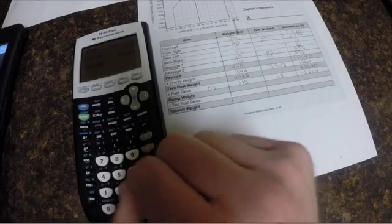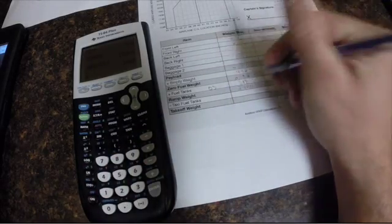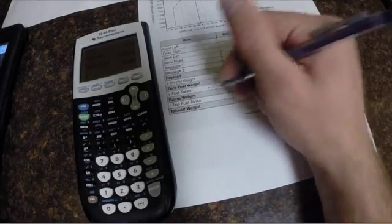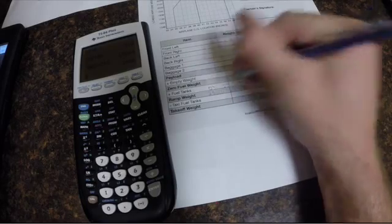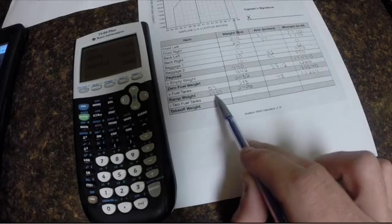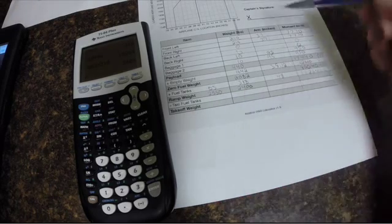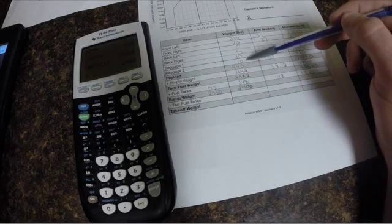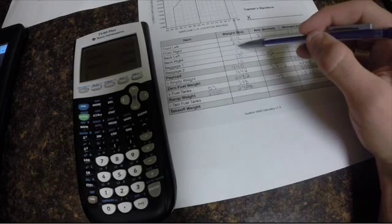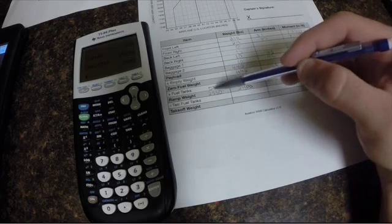So then you add these two together, 2,082 plus 318, and that gives you 2,400. Now the ramp weight for this specific plane is 2,550, so what that says is that if right now we were over 2,550 pounds, then we would have to either reduce fuel or our baggage or a passenger.